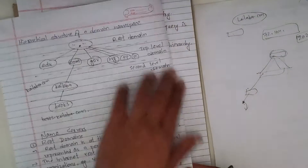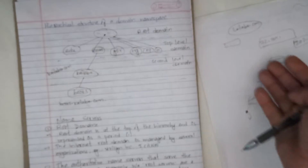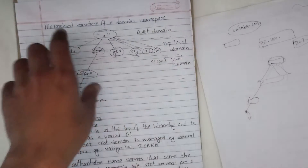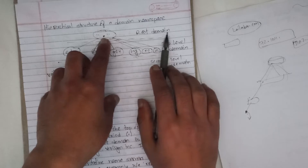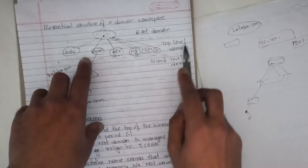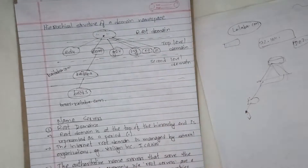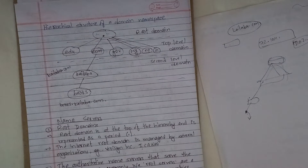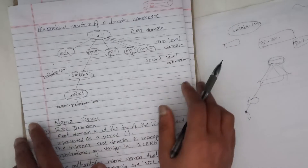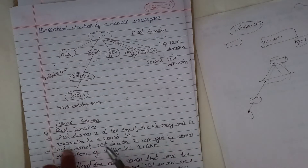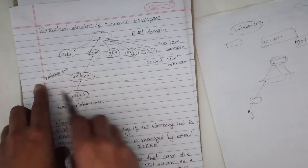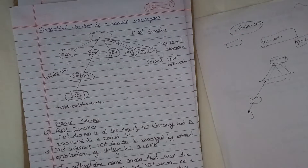DNS uses a different namespace where IP addresses can have names. It follows a hierarchical structure. The hierarchy has a root domain at the top, then top-level domains such as .edu, .com, .org, and top-level country domains. The second level domain is the name, like facebook or youtube.